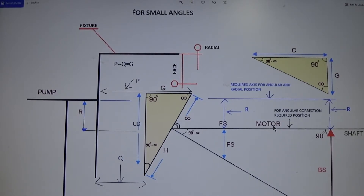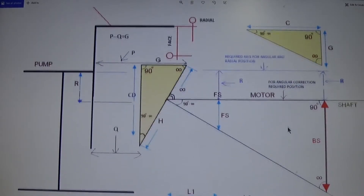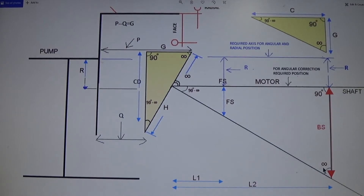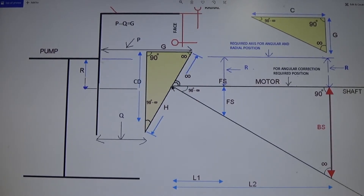Where you will be adding or removing the shims: FS is the front side, and you can see in this figure that you need to add shims here. BS is the back support. In this position of the motor, you will need to add shims equal to BS. L1 is the distance from the coupling face to the front support, and L2 is the distance from the coupling hub face to the back support.